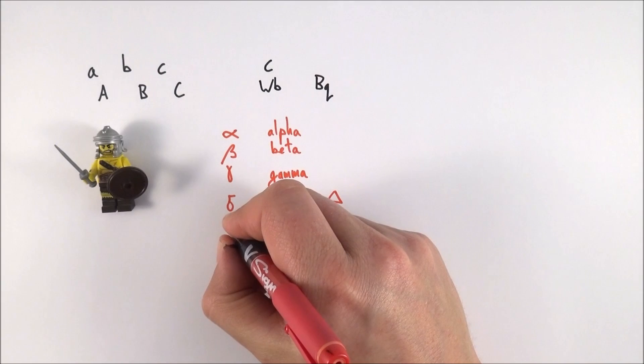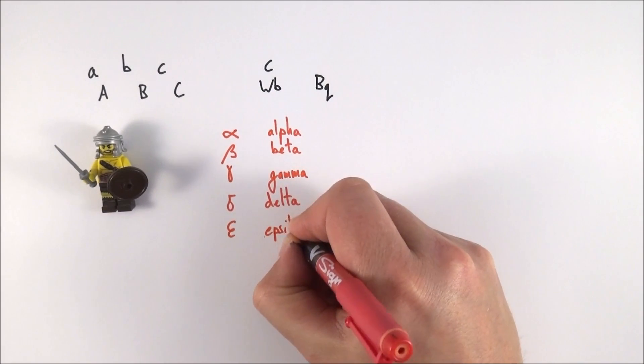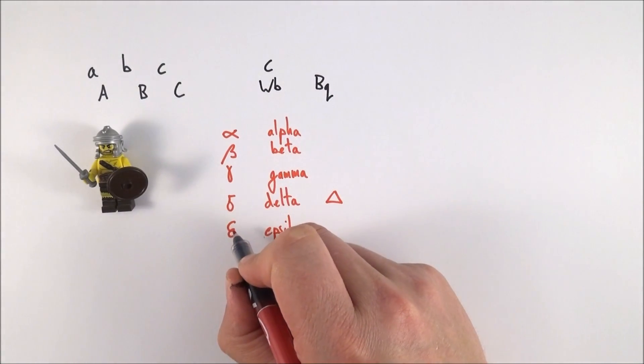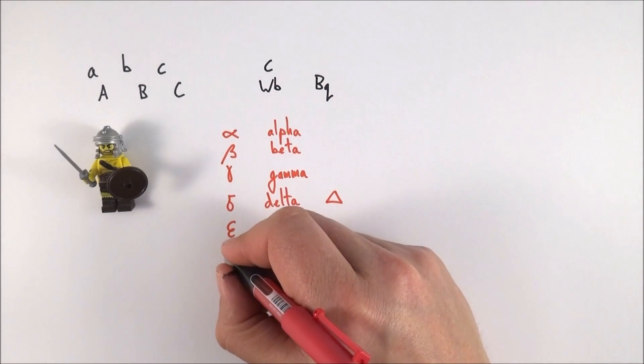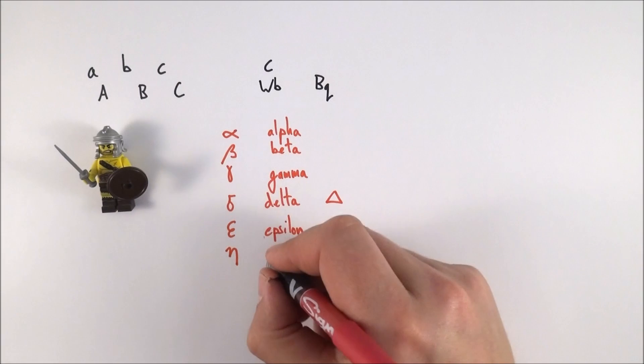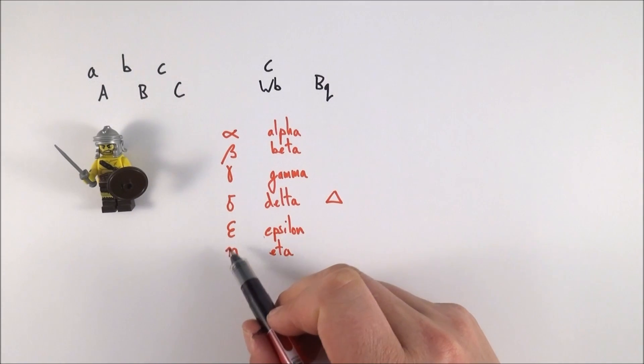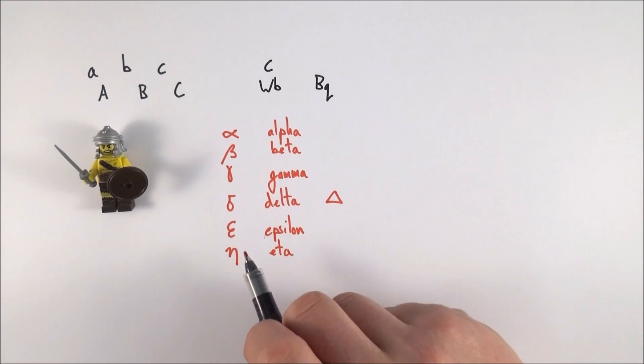After this we've got the letter epsilon, and epsilon can be used for things like emf, for example. It's basically a really curly e with maybe a little loop in there. After that there's a letter which we don't really use that much, but this is the letter eta. Eta is like the letter n with a really long tail on one end, and this is often used to represent efficiency.